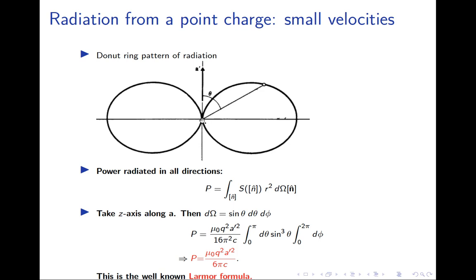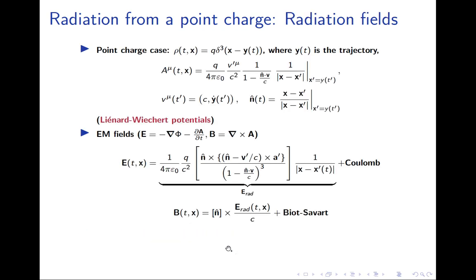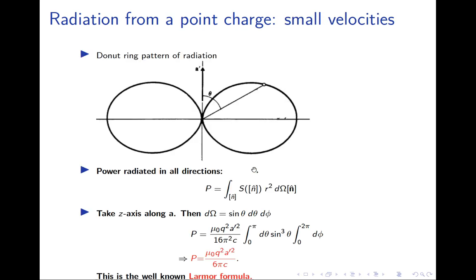The Larmor formula gives the power emitted by a charge moving with acceleration A at non-relativistic velocities. We have dropped all terms proportional to V/c. You can expand in V-prime/c, and the leading term is the Larmor formula. The sub-leading term is known as Larmor's correction, which Griffiths covers. People who are curious about it should look up Griffiths.